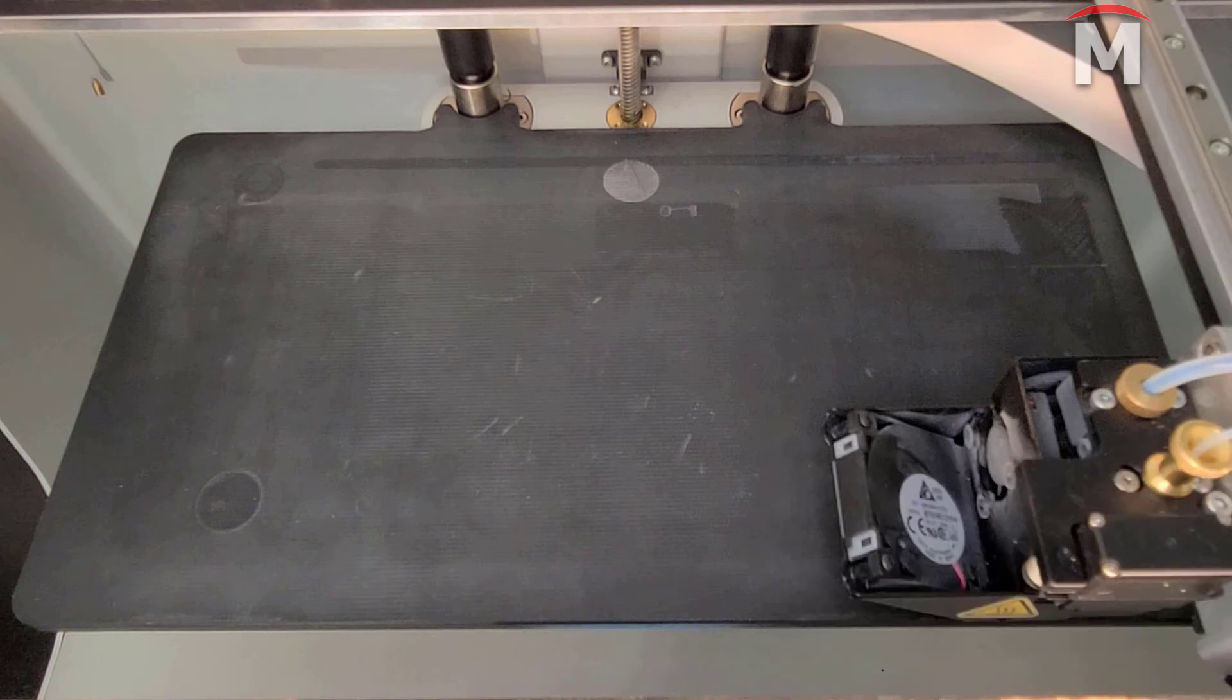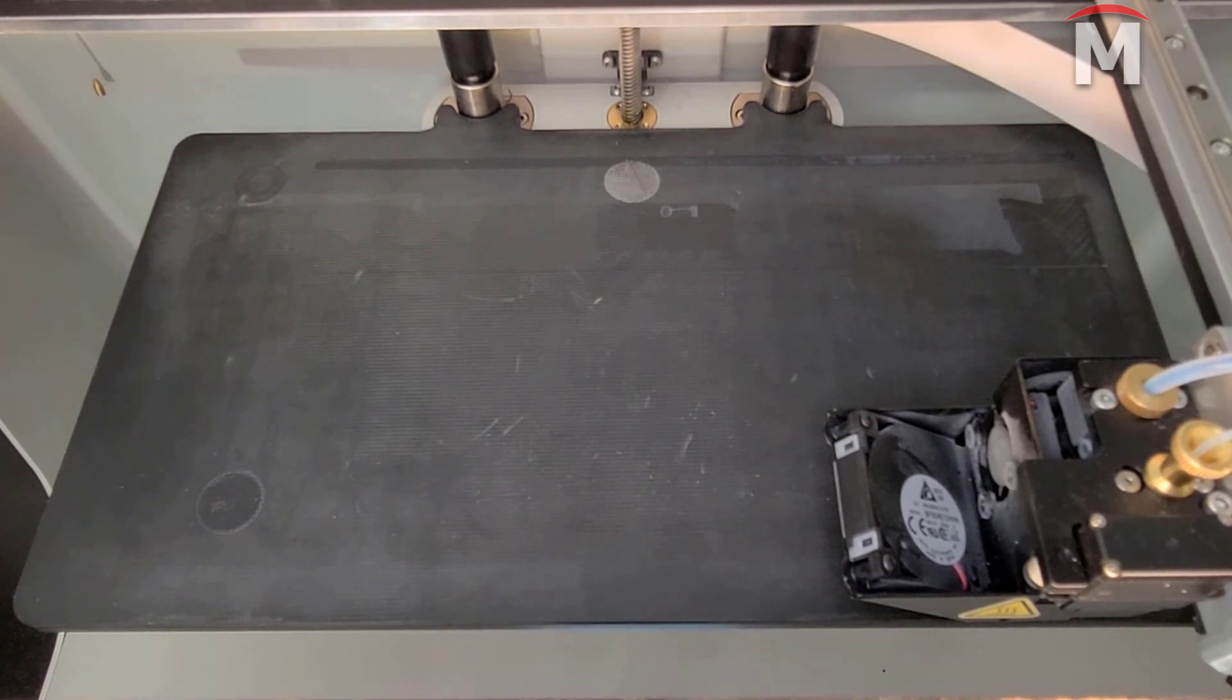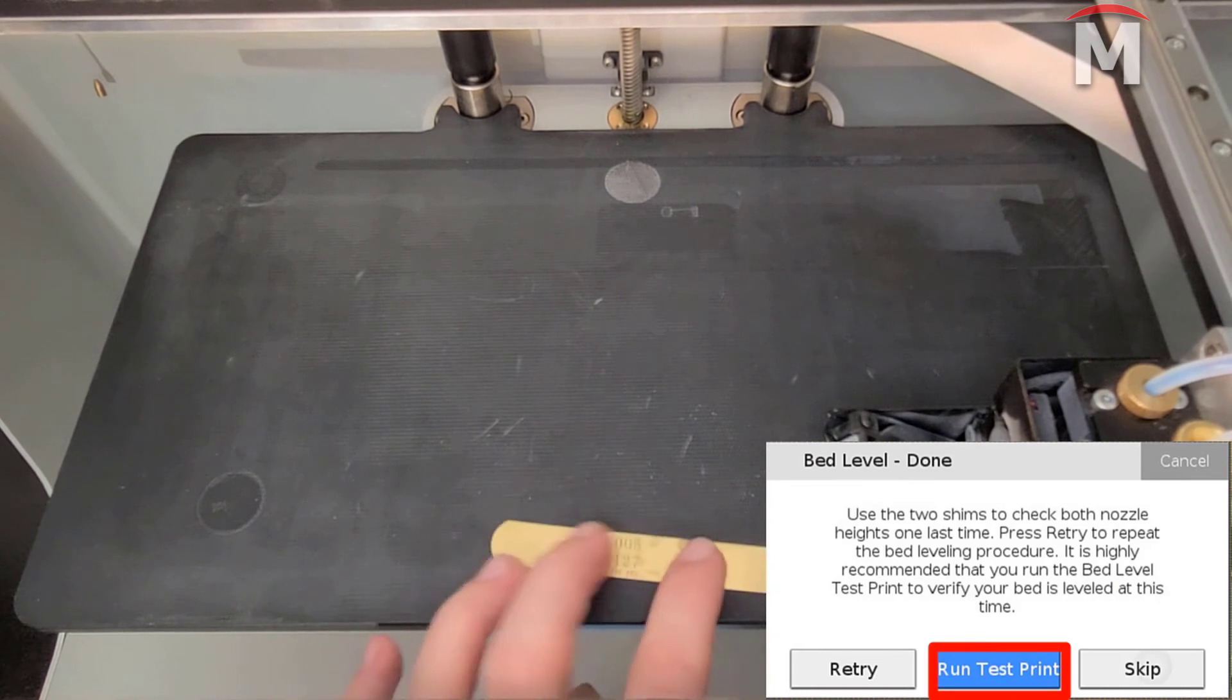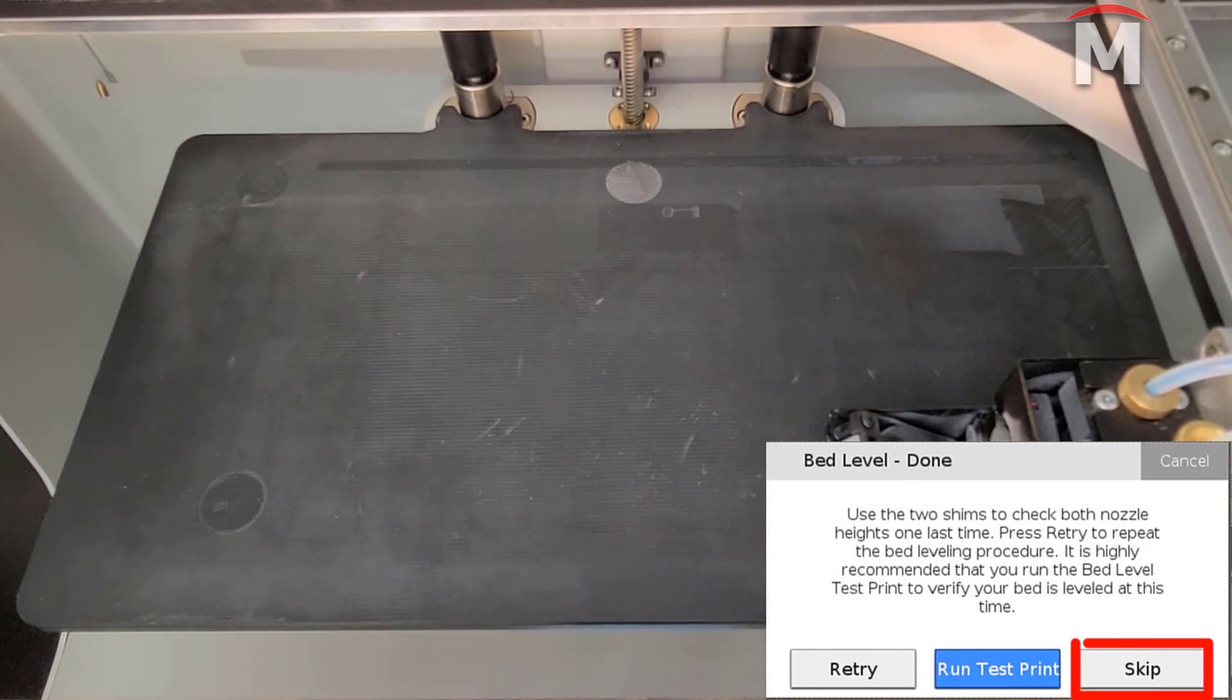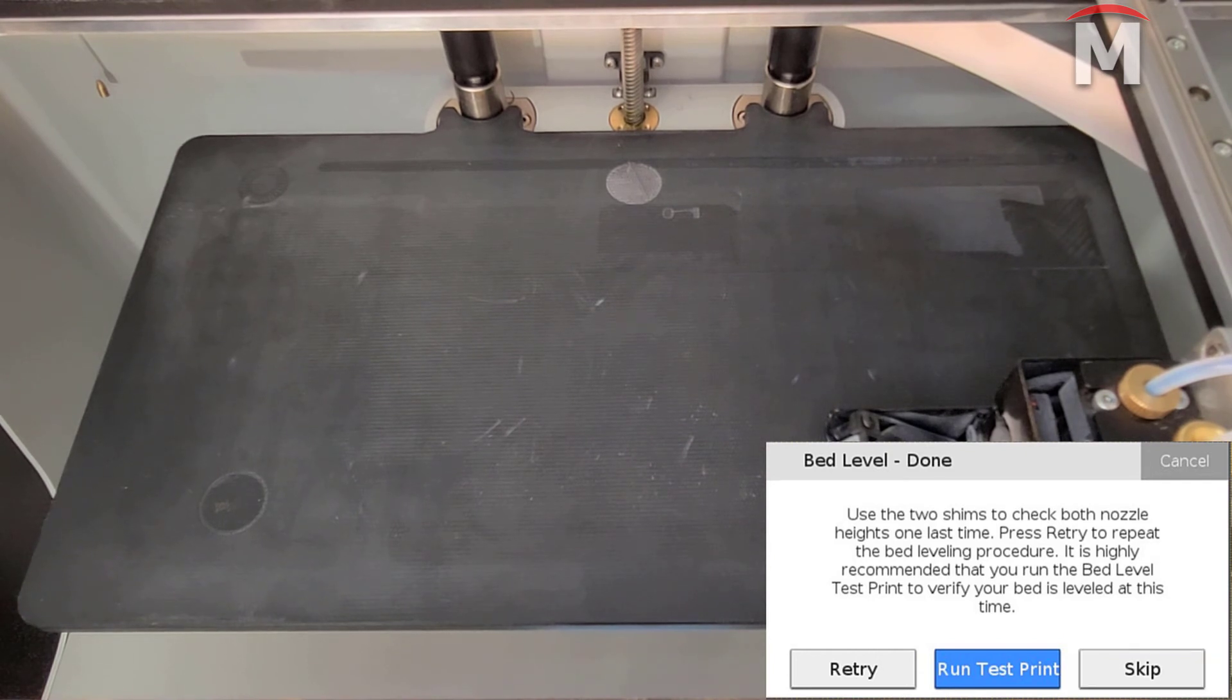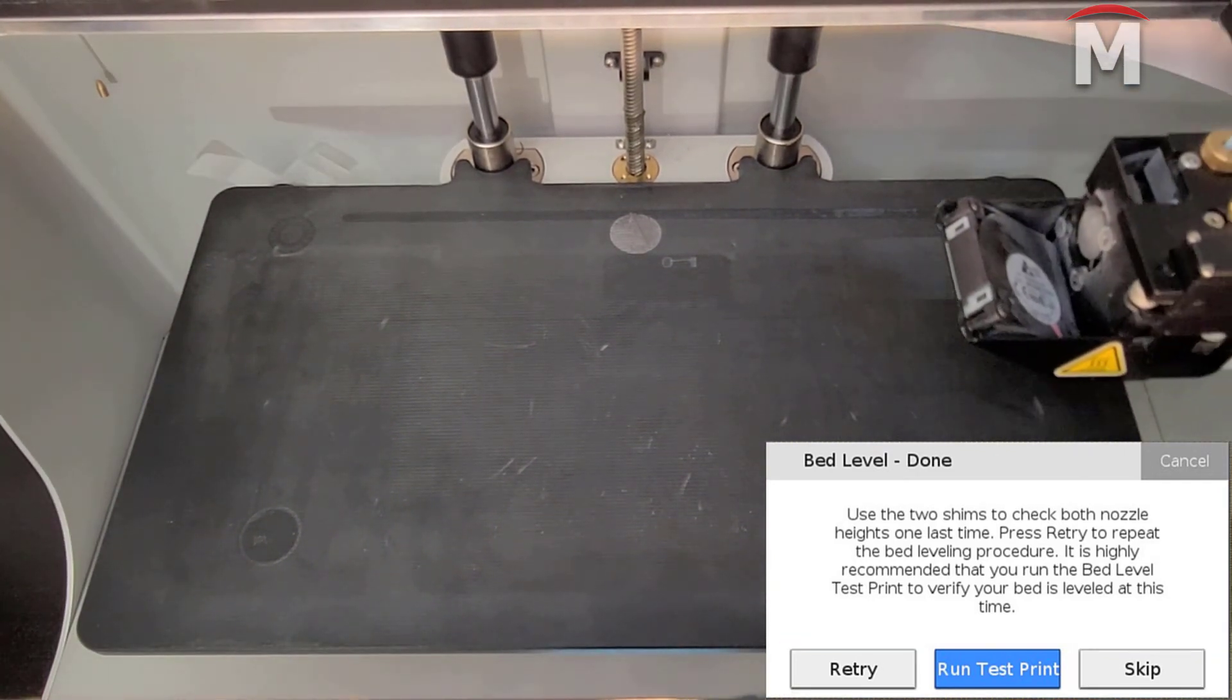Once you feel a slight resistance on the fiber shim, we will want to double check the resistance on both the plastic and fiber shims at this point. If we still have a slight resistance on both shims, we are going to press run test print to verify that our bed is level or select skip if we wish to exit the utility. If you do not feel a slight resistance, select retry and re-level your print bed.